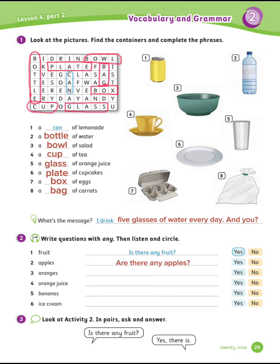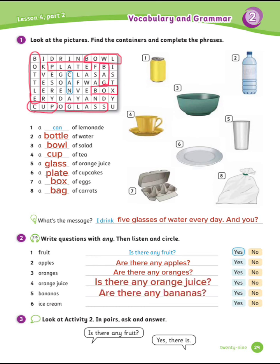Number 2: Are there any apples? Number 3: Are there any oranges? Number 4: Is there any orange juice? Number 5: Are there any bananas? Number 6: Is there any ice cream?